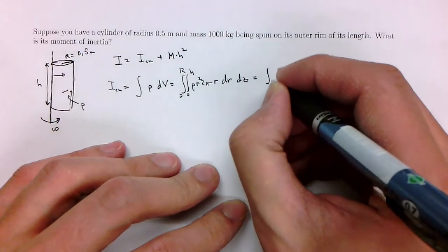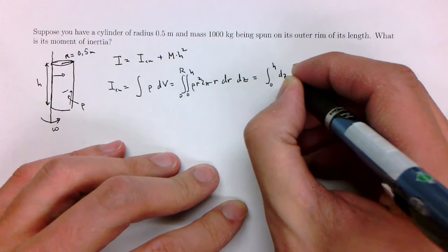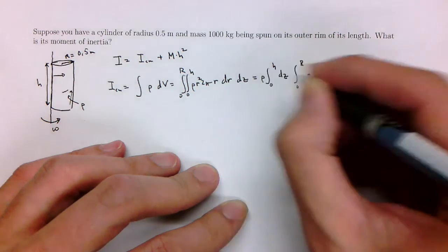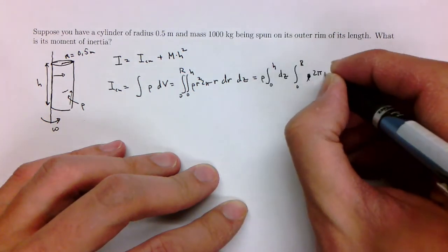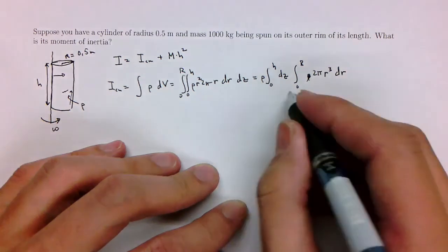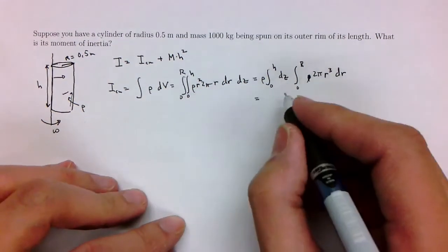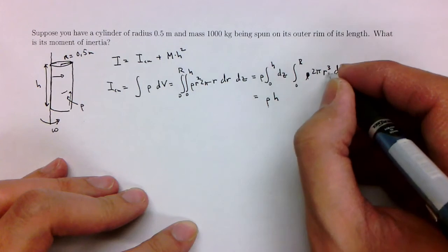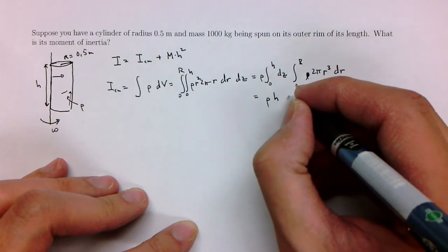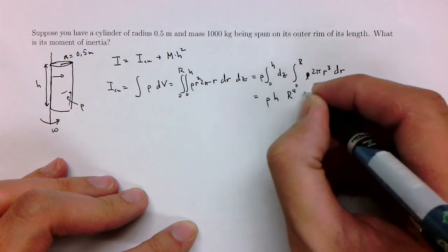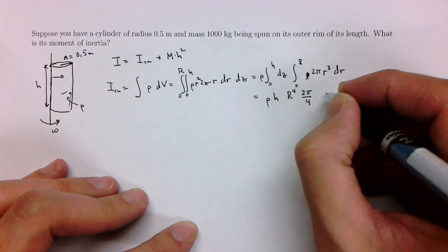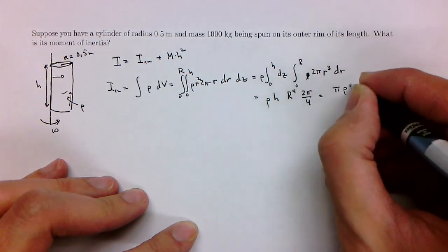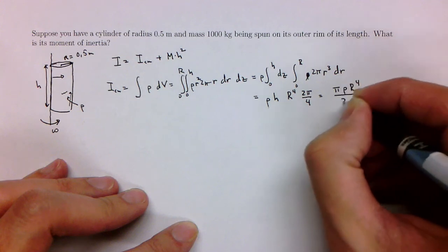So this is going to be equal to integral from 0 to h dz, integral 0 to r, rho. Let's factor out rho, 2 pi r cubed dr. So this integral here is going to be integral from 0 to h of dz, which is going to be rho times h times what? This is going to be r cubed, so it's going to be capital R to the fourth, 2 pi over 4, which is just going to be pi rho R to the fourth h over 2.